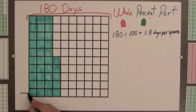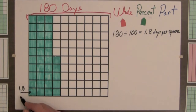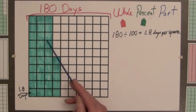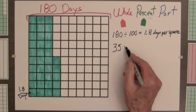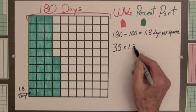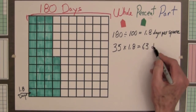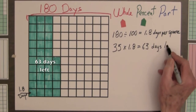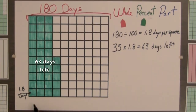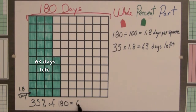We label one small square with 1.8 days. To find the value of the 35 small squares that represent the number of school days left, we multiply: 35 times 1.8 equals 63 days left. And 35% of 180 equals 63 days left.